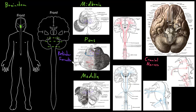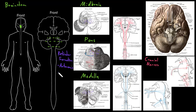The reticular formation turns out to be a really important structure. It plays a big role in lots of autonomic functions and plays a big role in controlling things like circulation, respiration, and digestion — some of our critical organ system functions. In addition to that, the reticular formation sends lots of axons projecting up to the cerebrum, playing a major role in lots of the higher functions of the nervous system as well, including cognition, emotion, and consciousness.